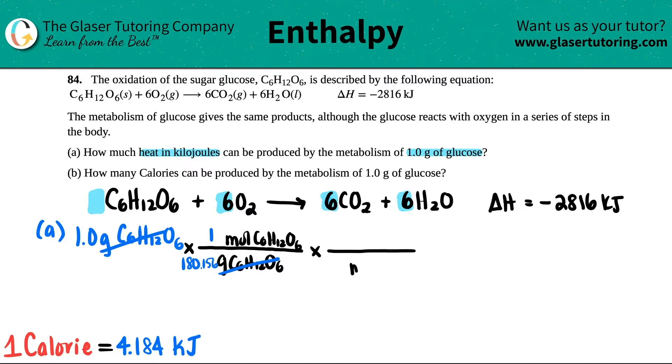Write the ratio, mole of C6H12O6 on the bottom, and I just want the kilojoules. So the number is telling me that for every negative 2,816 kilojoules, right, 2,816 kilojoules that's being released.